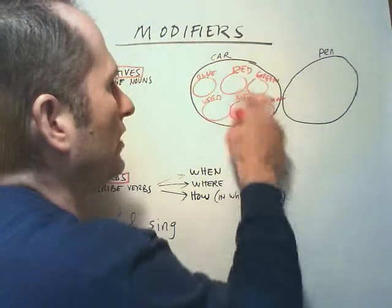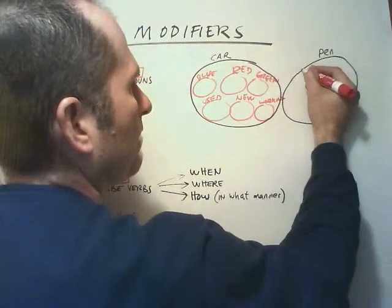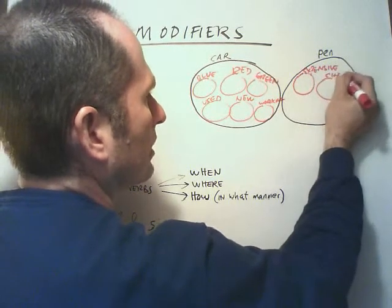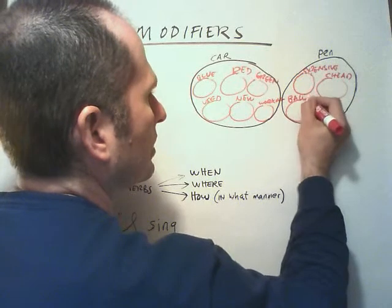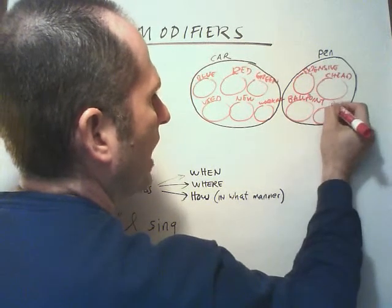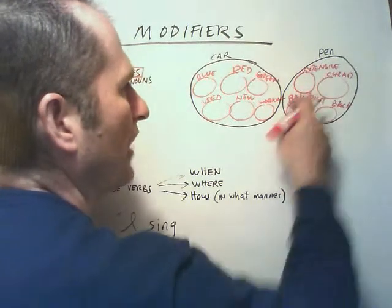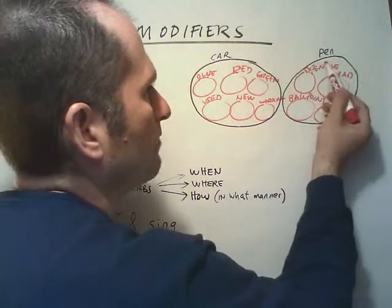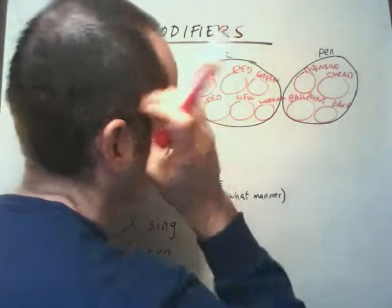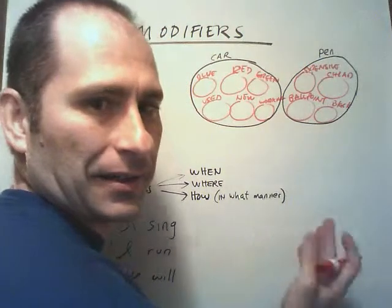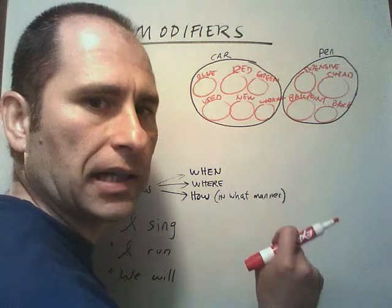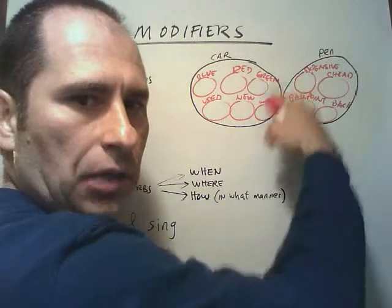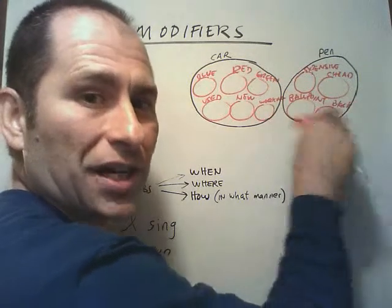You can string adjectives together to get smaller and smaller groups: broken-down red used cars — a very small subgroup. The same applies to 'pen.' You have expensive pens, cheap pens, ballpoint pens, black pens, fountain pens. You can string them together: the expensive ballpoint black pen — a very small subgroup. Adjectives shrink the category and introduce subcategories within the larger general category.